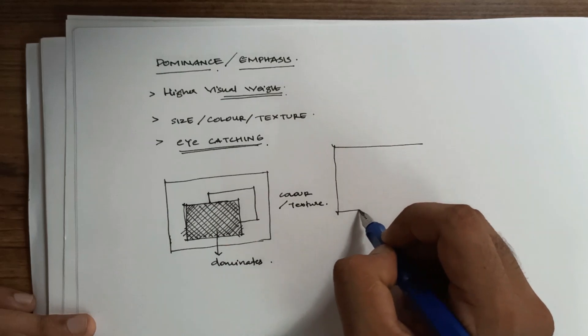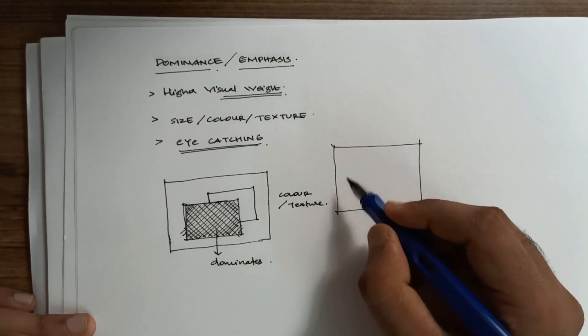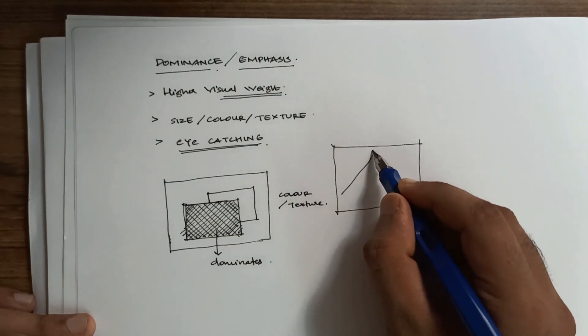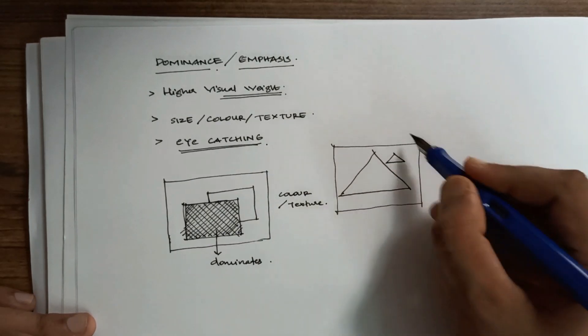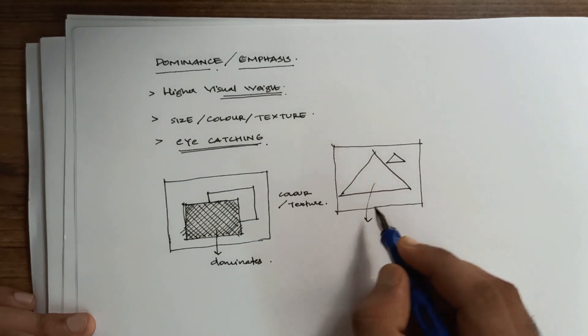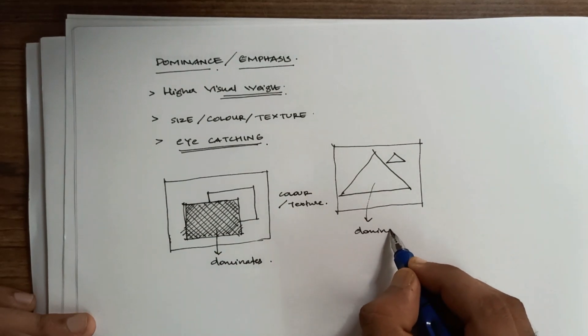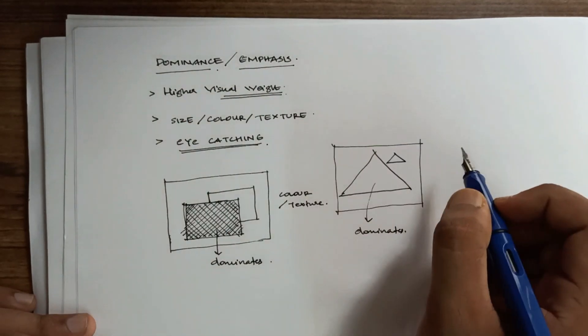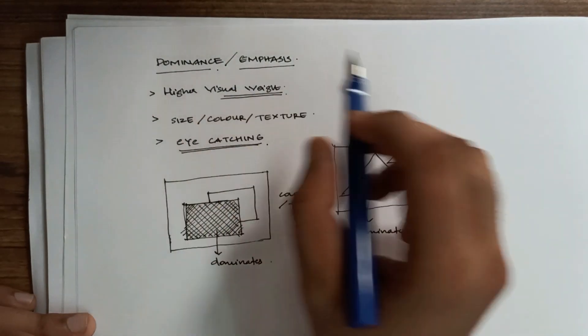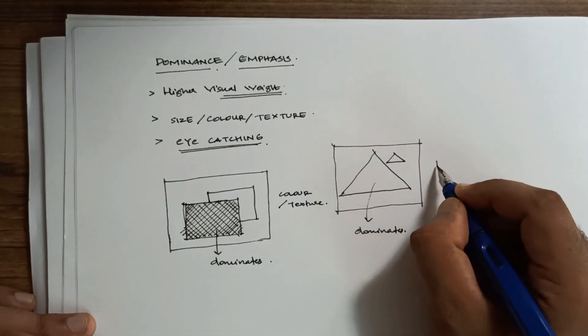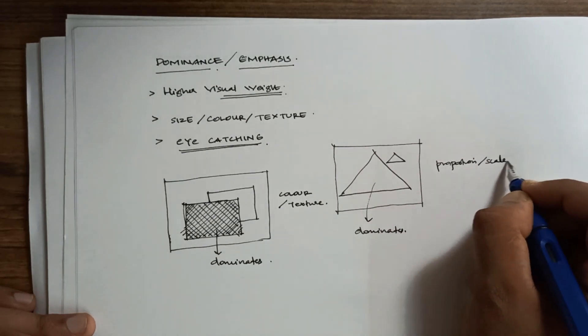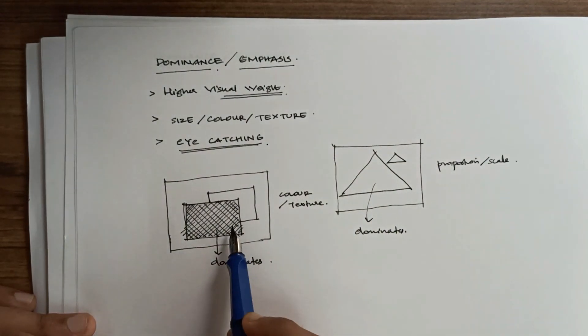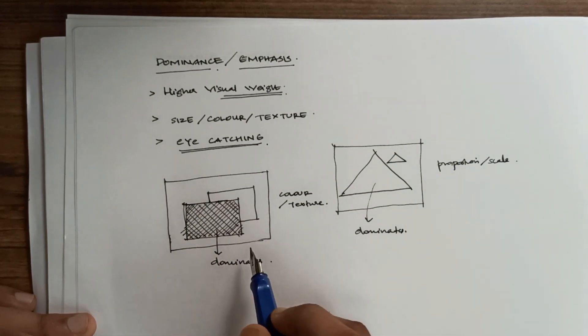It can even be in terms of their size. Imagine I have a field of view with a larger triangle and a smaller triangle. In terms of size it is dominating. Whenever dominance discussion comes, it is also associated with proportion or scale. Here the scale is what is dominating. Here the color or texture is what is dominating.